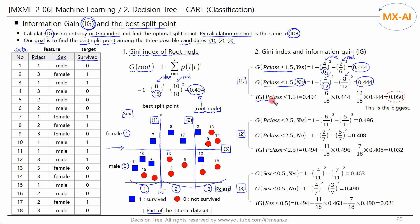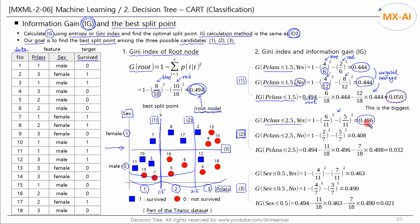Now I will calculate the information gain. The Gini index of the root node is 0.494. If we subtract the weighted average of the Gini indices calculated above from that, that is the information gain. Next, let's calculate the information gain for the second split candidate, where PCLASS is 2.5. Data points with PCLASS less than 2.5 give a Gini index of 0.496. Data points with PCLASS greater than 2.5 give a Gini index of 0.408. The information gain is 0.032.